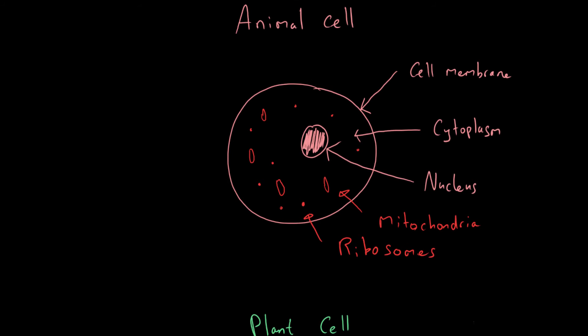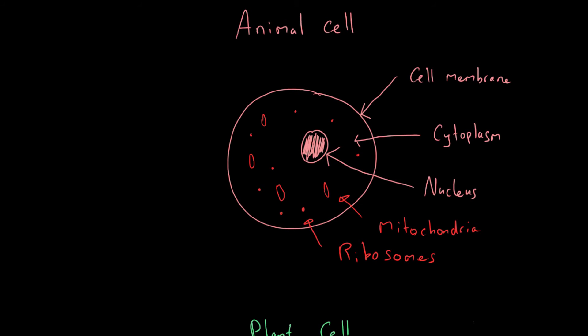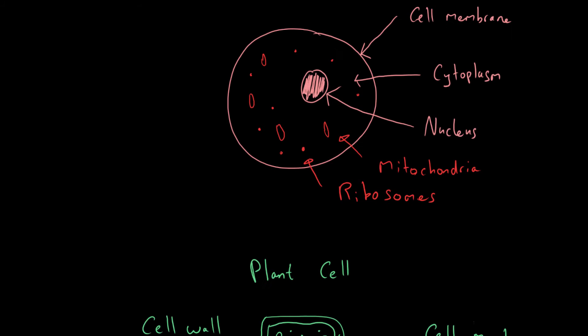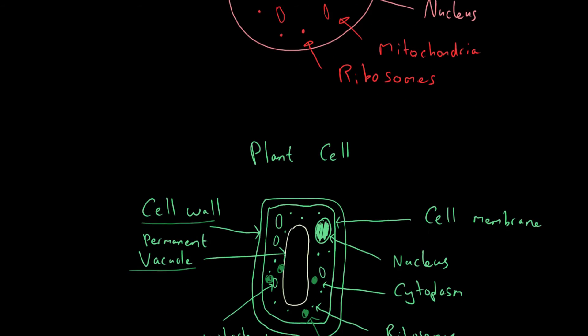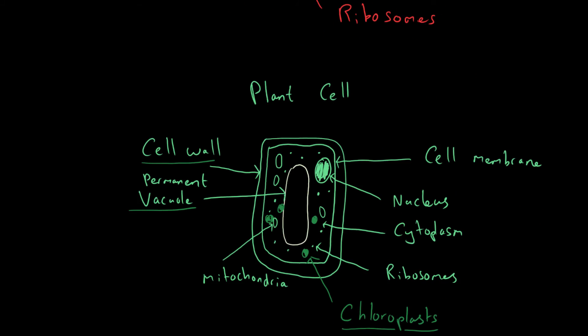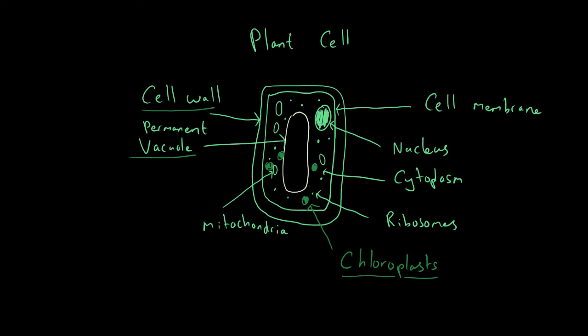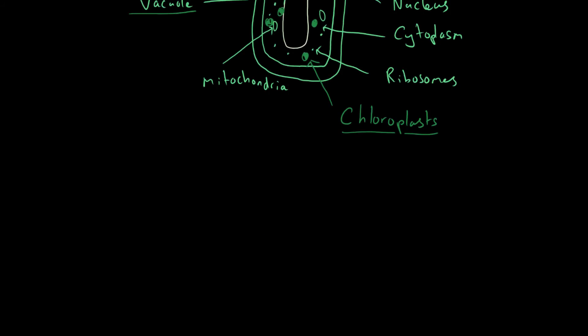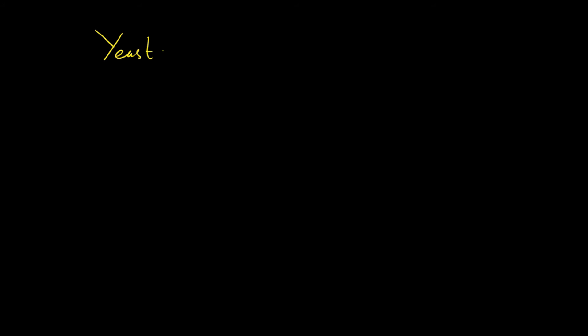To summarize the differences: the cell wall, permanent vacuole, and chloroplasts are not present in the animal cell. The animal cell contains a cell membrane, cytoplasm, nucleus, mitochondria, and ribosomes - but not those three plant-specific structures.